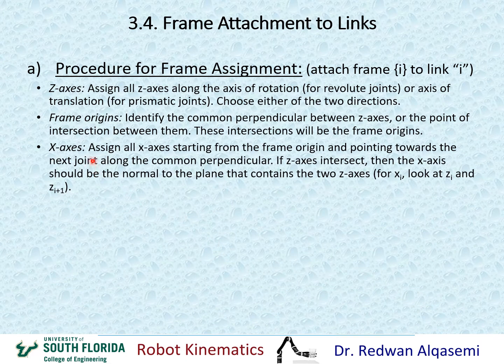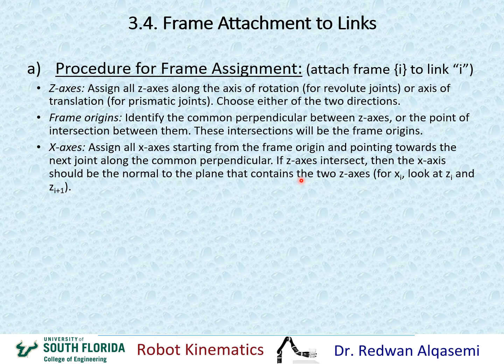Now for assigning the X axis: assign all X axes starting from the frame origin we just found, pointing towards the next joint axis. The arrowhead for the X axis is not arbitrary — it has to be pointing towards the next joint axis along the common perpendicular. And if Z axes intersect, then the X axis should be the normal to the plane that contains the two Z axes.